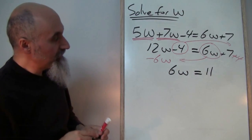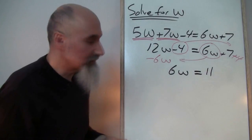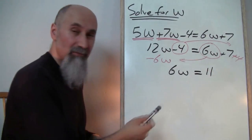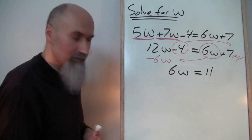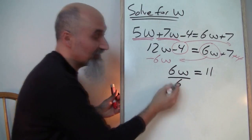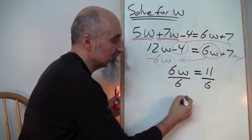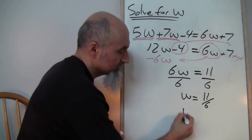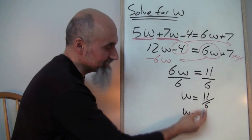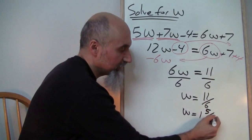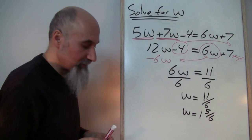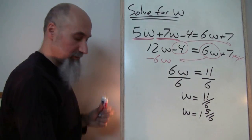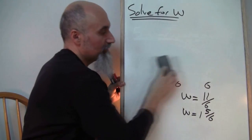After moving terms, I have 6w = 11. The w is being multiplied by 6, so I divide both sides by 6. This gives w = 11/6. As a mixed number, 6 goes into 11 once with 5 remaining, so w = 1 and 5/6. Knowing how to deal with fractions is extremely important.